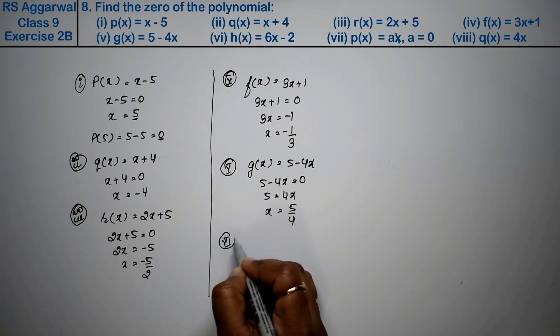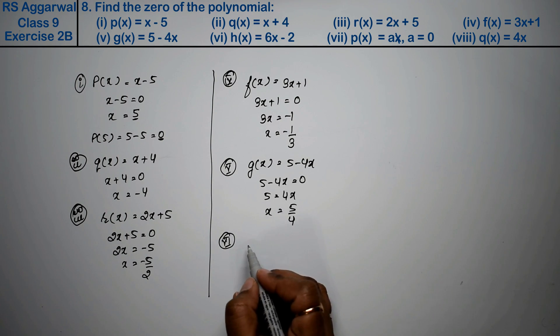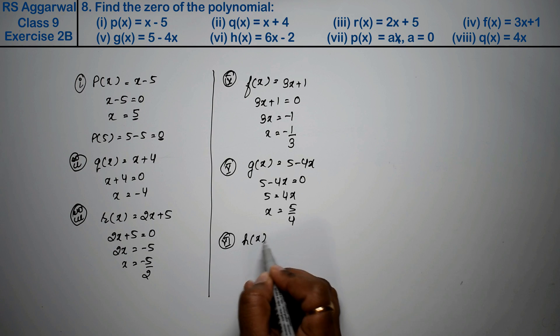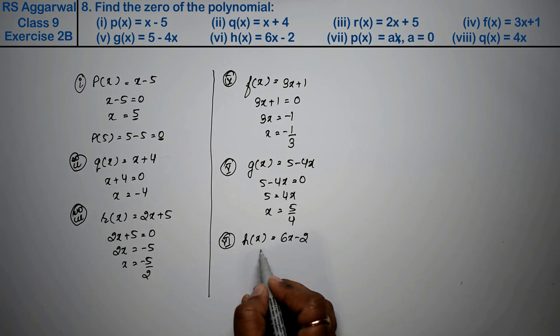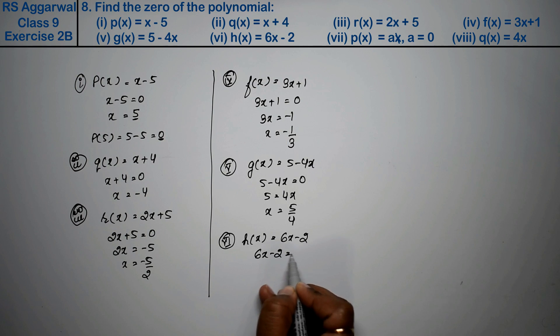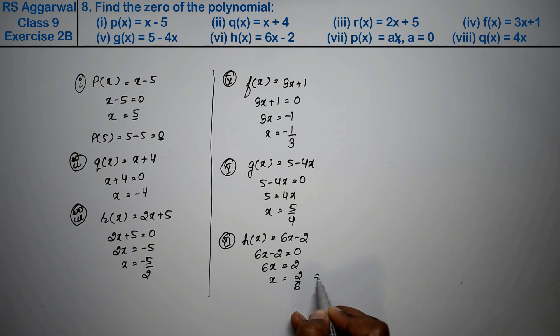Sixth part: h(x) equals 6x minus 2. Setting 6x minus 2 equals 0, minus becomes positive on the other side giving 2. x equals 2 upon 6. That is 2 ones are 2, 2 threes are 6, so 1 upon 3 is the answer.